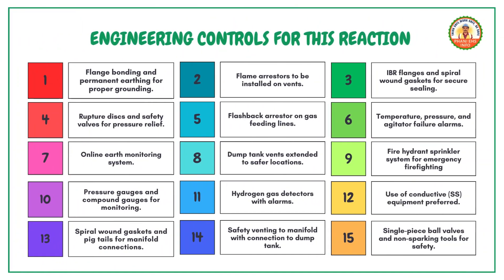Engineering controls. To ensure safety, implement the following engineering controls: flange bonding and permanent earthing for proper grounding; flame arresters installed on vents; IBR flanges and spiral wound gaskets for secure sealing; rupture discs and safety valves for pressure relief; flashback arrestor on gas feeding lines; temperature, pressure, and agitator failure alarms.